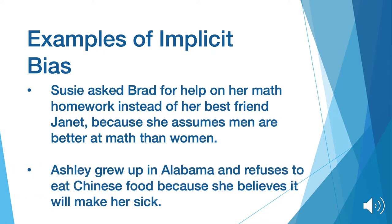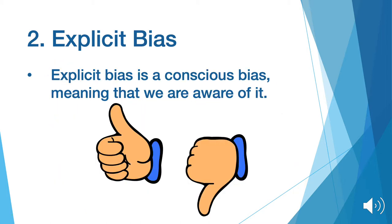Another example would be how Ashley grew up in Alabama and refuses to eat Chinese food because she believes it will make her sick. This is an example of implicit bias. Due to Ashley's upbringing in Alabama, she has a preconceived notion that other ethnicities' food will make her sick.